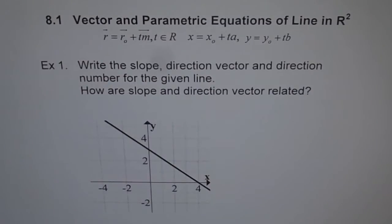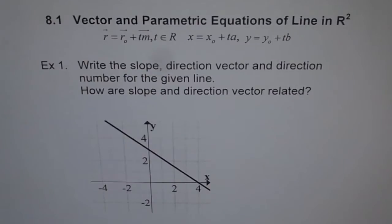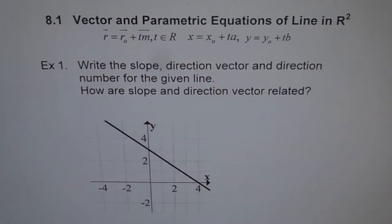Vector and parametric equations of a line in R2. I would like to explain the concept of a line with this example. A line, as you know, can be written in slope-intercept form, which is y equals mx plus b, or in standard form, ax plus by plus c equals 0, which you know fairly well. Now we will introduce vectors and relate these ideas so there is a connection for you.